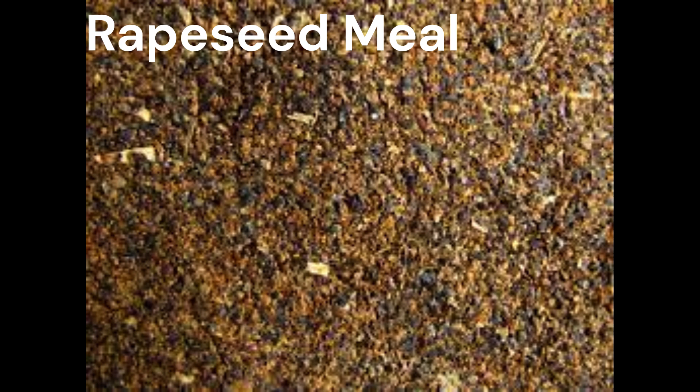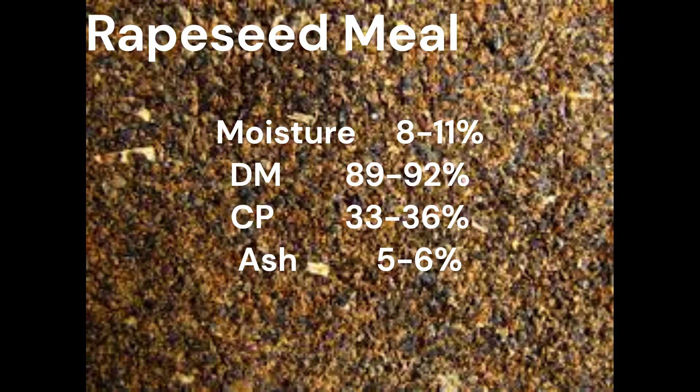Rapeseed meal is also commonly used as a feed ingredient. It contains moisture 8-11%, dry matter 89-92%, crude protein 33-36%, and ash 5-6%.